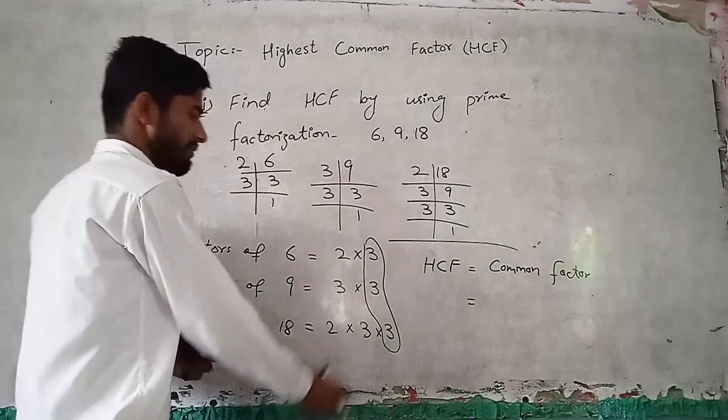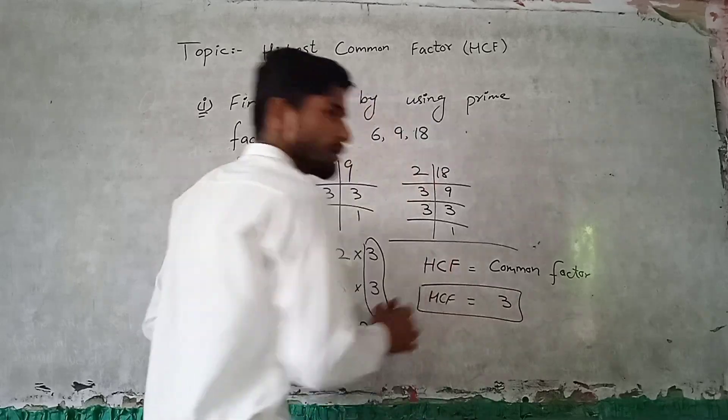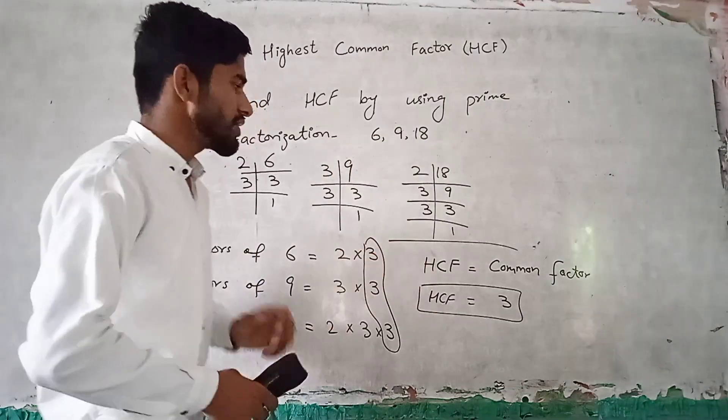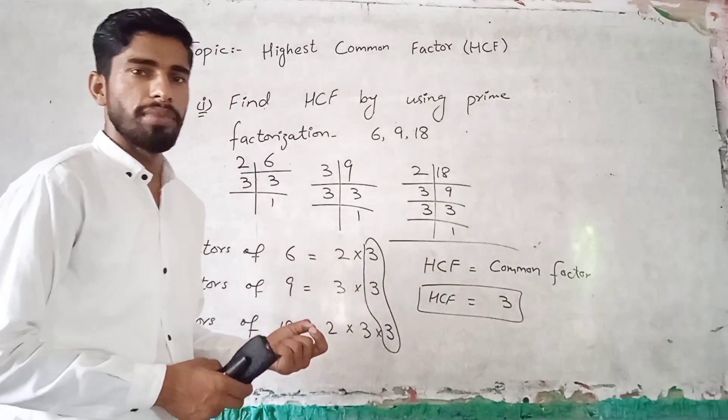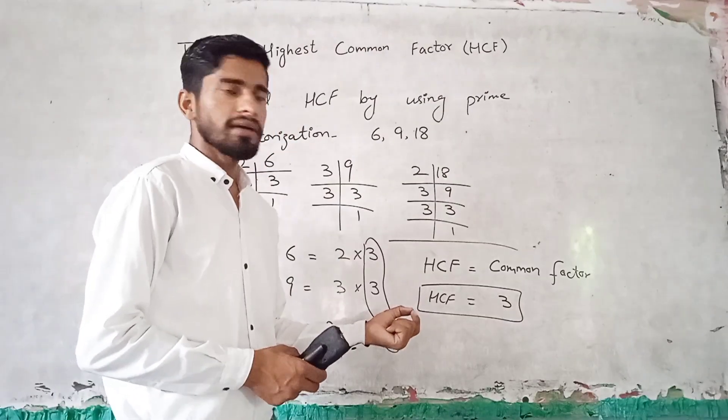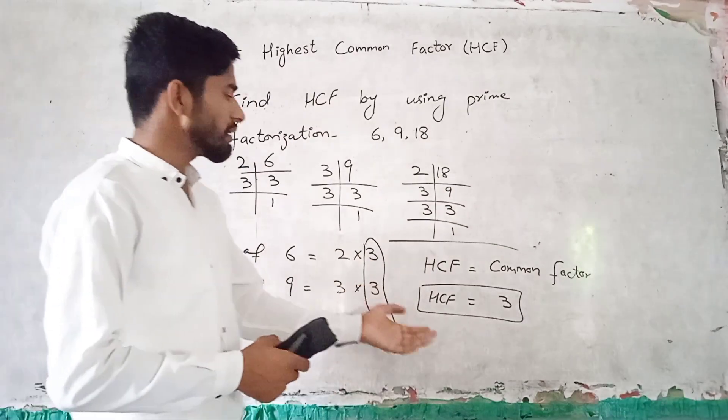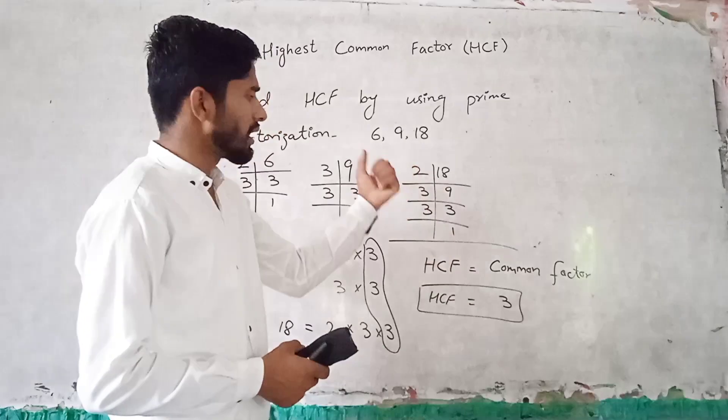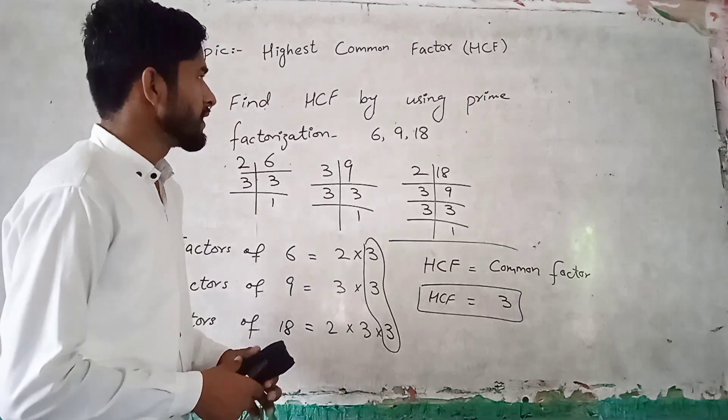So the common factor is 3. The HCF of the question 6, 9, and 18 is 3. So this is the HCF. HCF is the same number which is 3 divided by 6, 9, and 18. So HCF is the most important number which is 3.